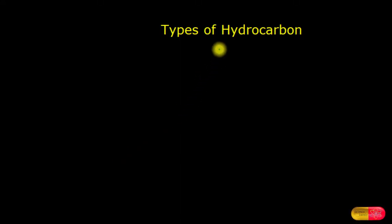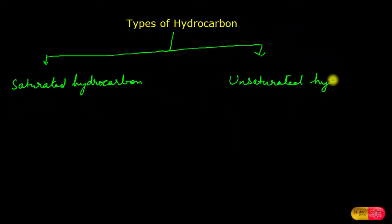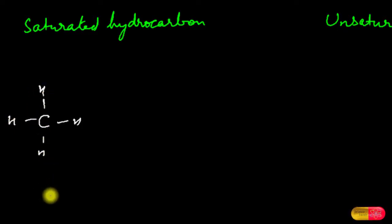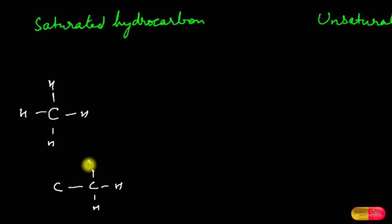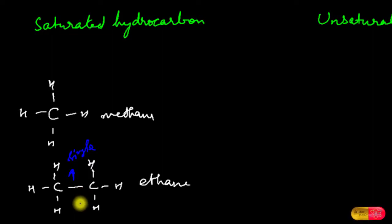Hydrocarbons are broadly classified into two categories: saturated hydrocarbon and unsaturated hydrocarbon. Looking at methane and ethane structures, if you see the structure of ethane you will find two carbon atoms bonded by a single bond. The hydrocarbons which are made of carbon-carbon single bonds are what we call saturated hydrocarbons.